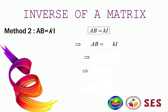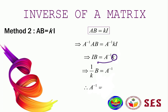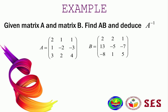The second method uses AB equals kI. To find the inverse, multiply both sides by A inverse on the left. We know that A inverse times A equals I, and k times I gives k. Moving k to the left-hand side gives 1 over k times B equals A inverse. Therefore, A inverse equals 1 over k times B, where A and B are matrices and k is a constant.